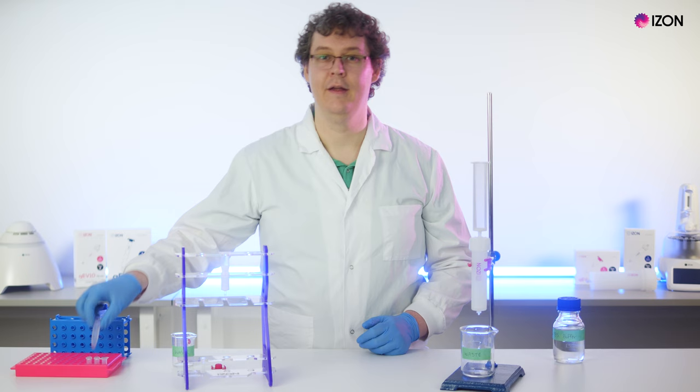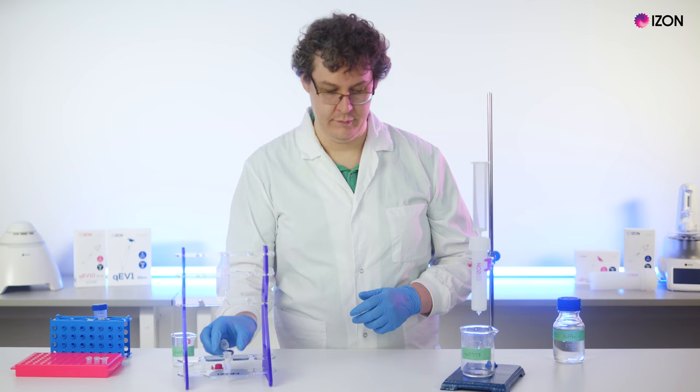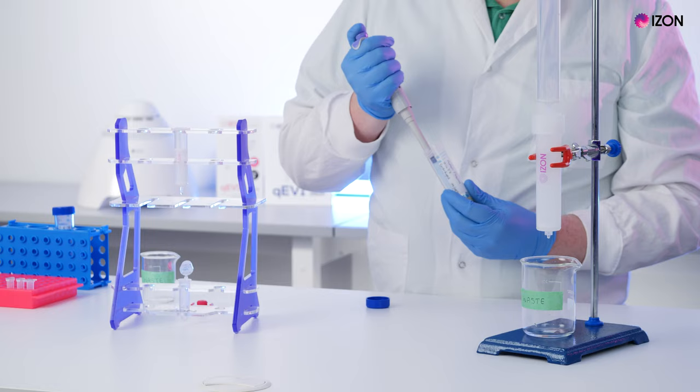Once your column has been flushed, put your collection vessel in place under the column. This will be either your labeled buffer volume collection vessel, or if you do not wish to collect the buffer volume, then this will be your waste vessel. Then you can load your sample.